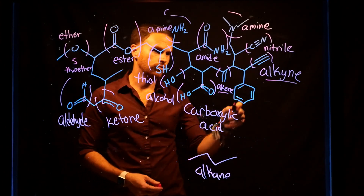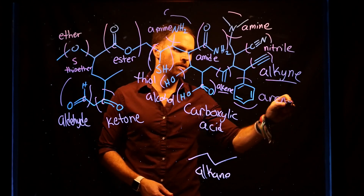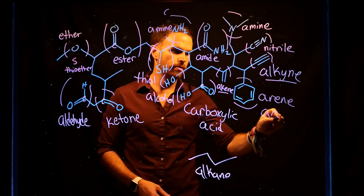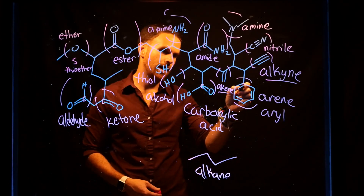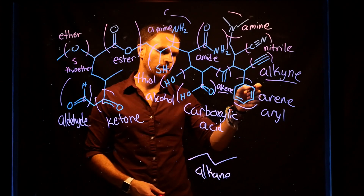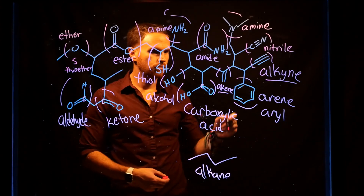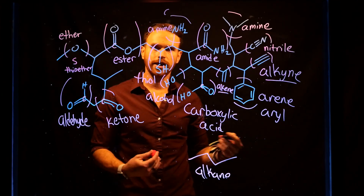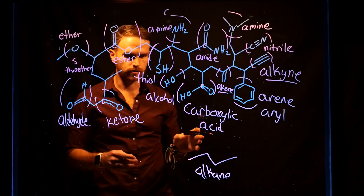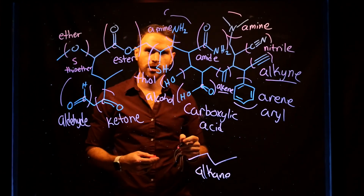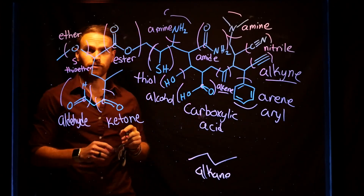The last functional group is the arene or aryl group. It has a six-membered ring with three double bonds on adjacent carbons. These are all of the functional groups, and it's going to be really important for this course that you are able to identify these basic functional groups moving forward.